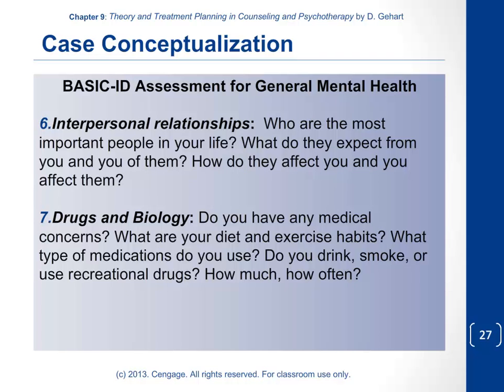The final BASIC-ID elements: Interpersonal Relationships — who are the important people, what do you expect of them, how do they affect you, do you have close intimate personal relationships going well? Drugs and Biology — do you have medical concerns, what are your diet and exercise habits, what medications do you use, do you drink, smoke, or use recreational drugs and how much? This gives a thorough assessment of the basic biology of the situation.